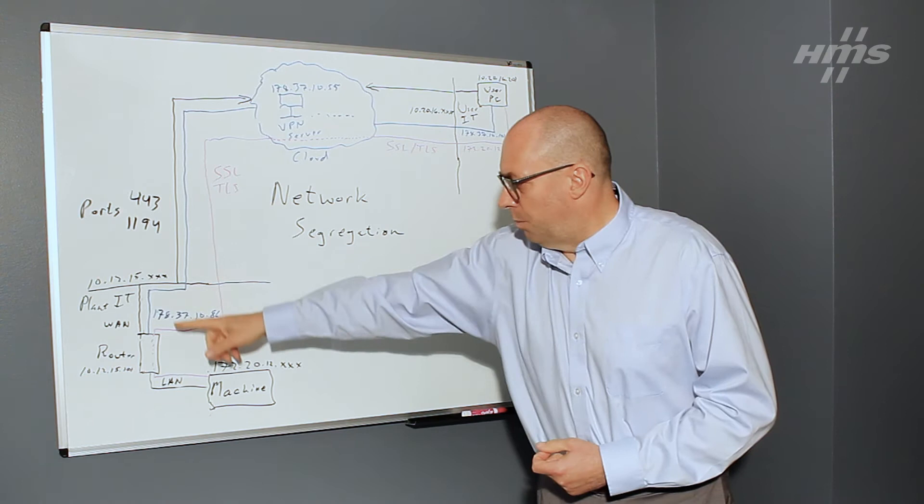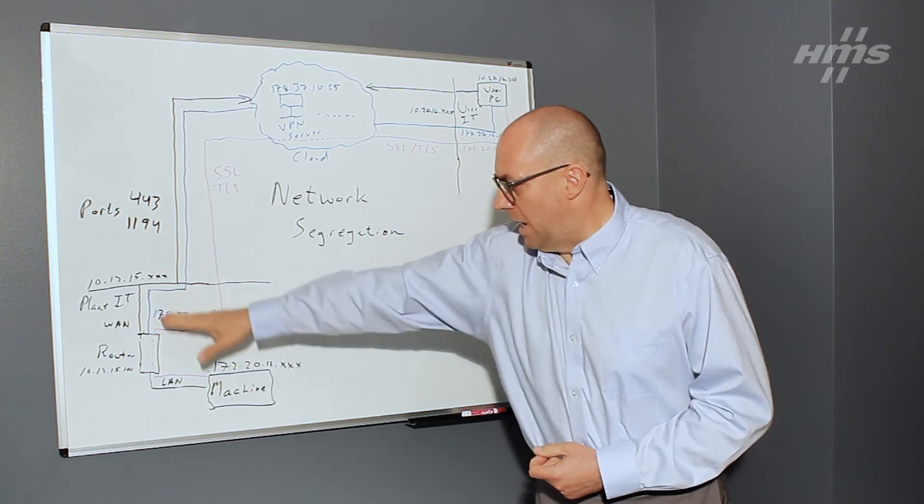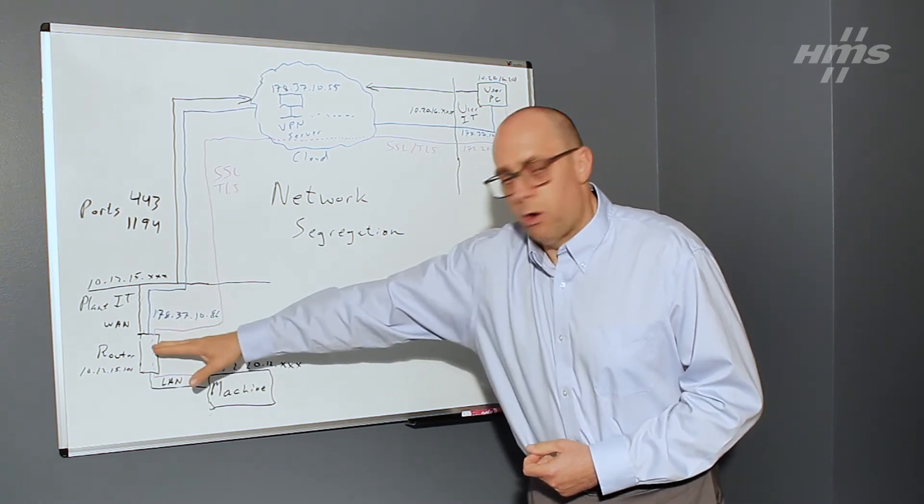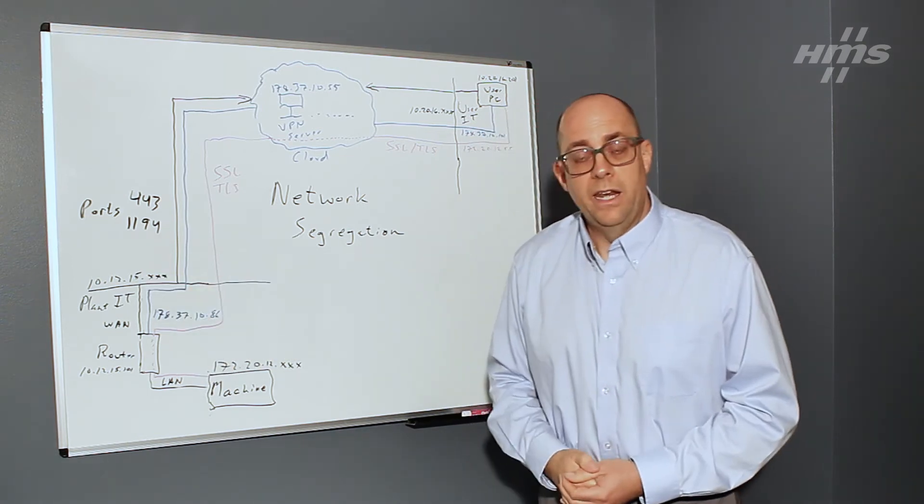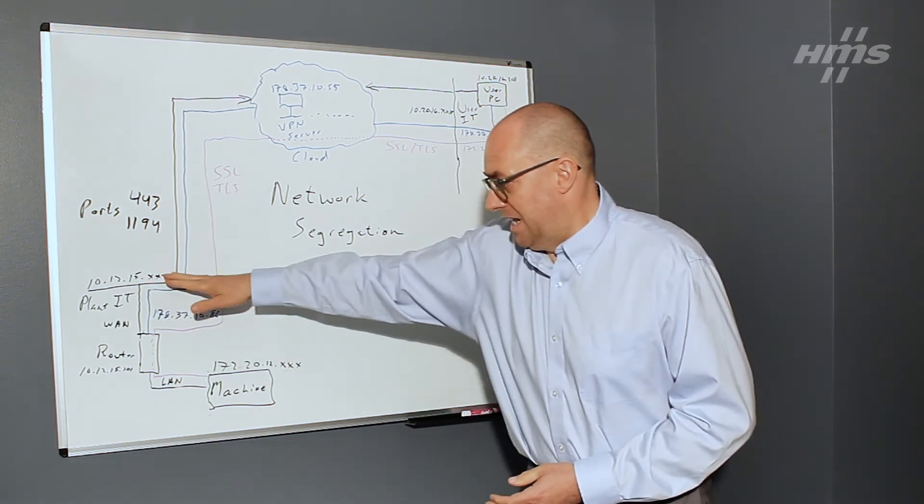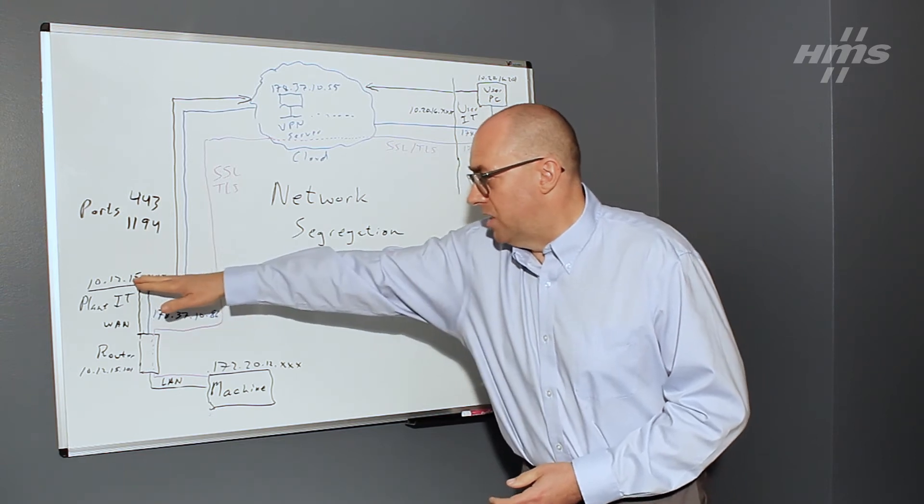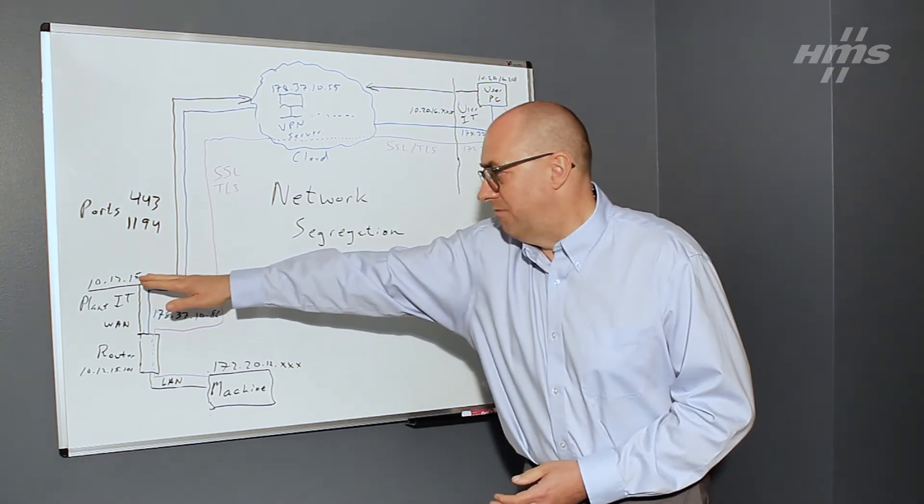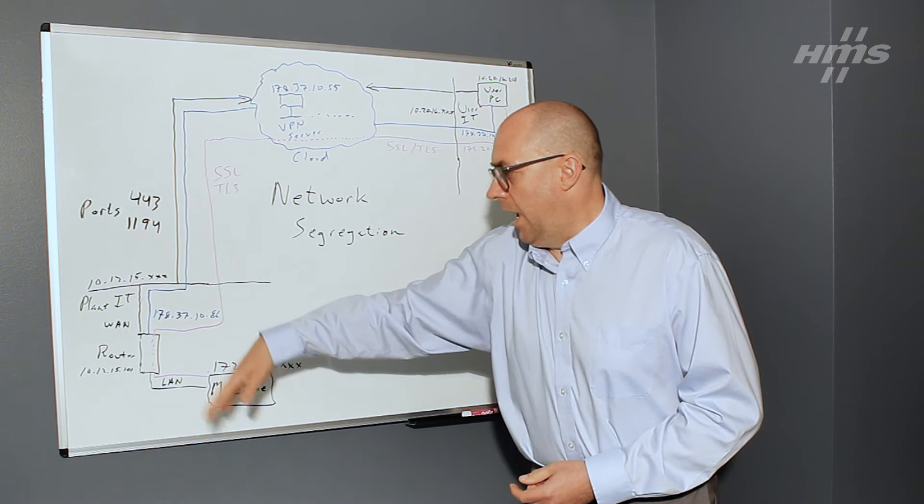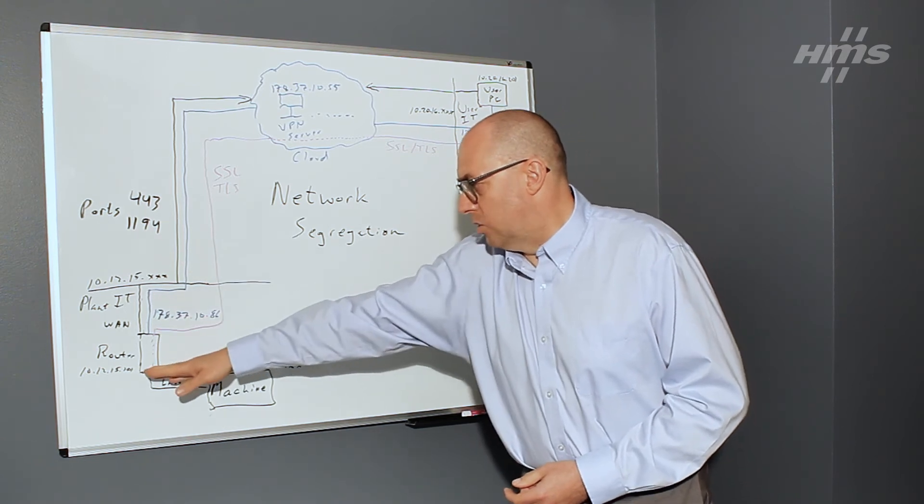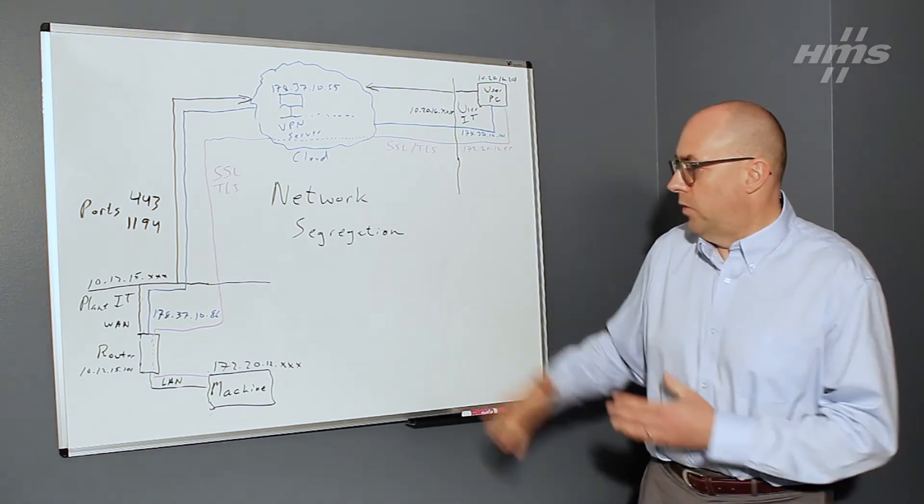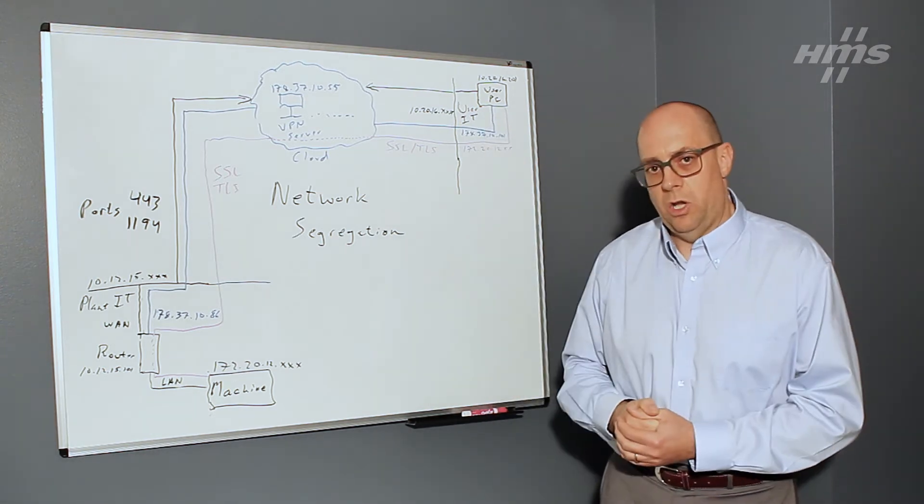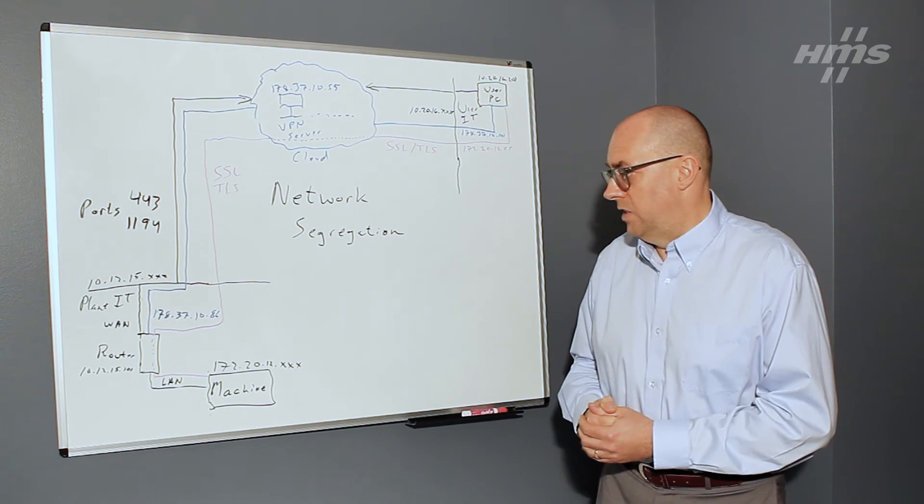Additionally, within the host environment down here on the plant floor, this router also needs to connect up to some form of internet connected network. So let's say this is the plant IT network. And this is functioning on a different subnet, 10.12.15.xx. And then it is assigned an IP address, DHCP say 10.12.15.101. So these two devices exist on two different subnetworks in this environment.